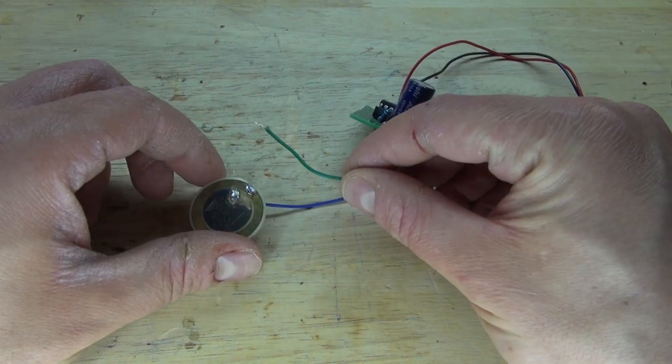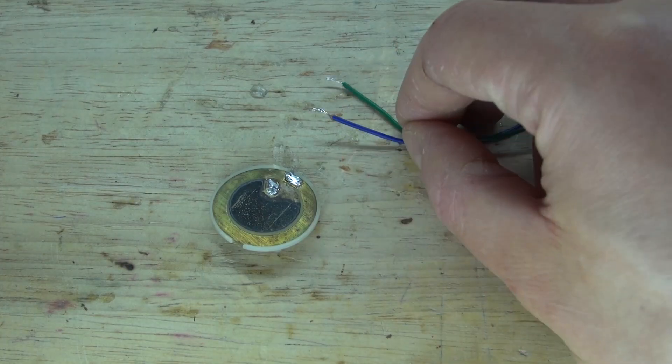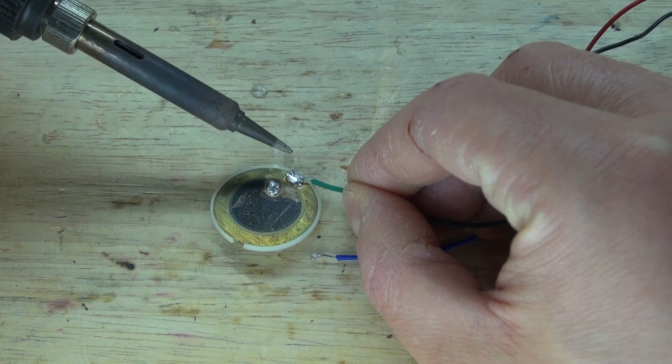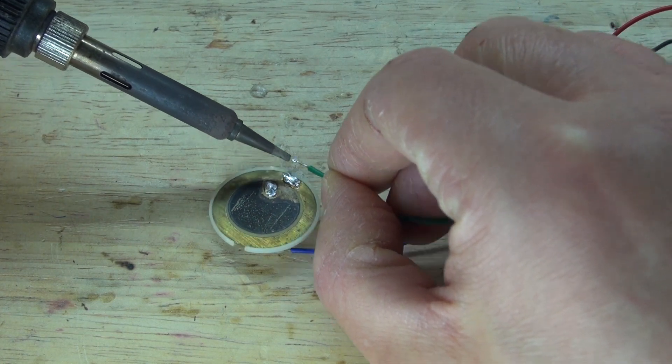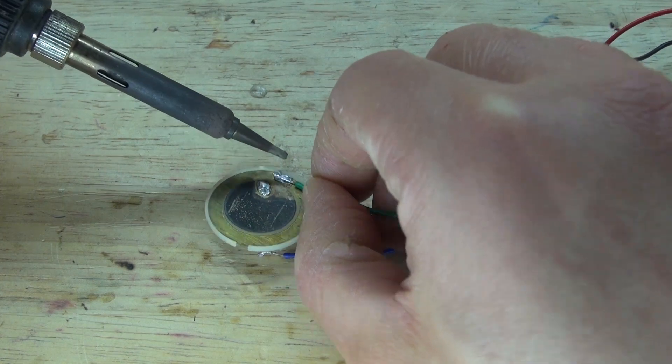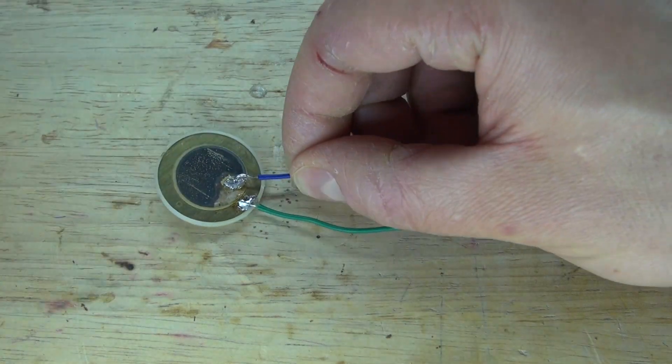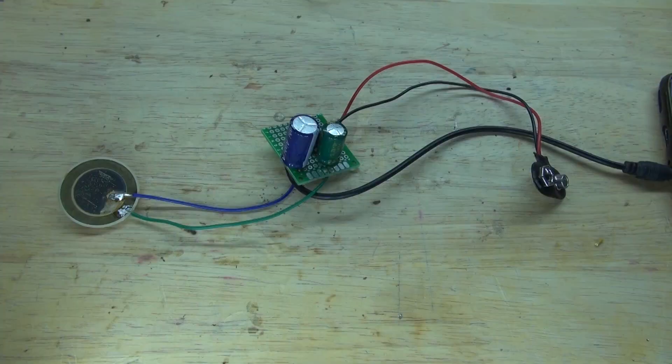Next what I need to do is attach the piezo to it. Simply take the piezo and solder the wires to it. Polarity in this situation doesn't matter. Solder the first wire into place, and I'll solder the second wire. And there, the circuit is now complete. Let's go ahead and test it out.